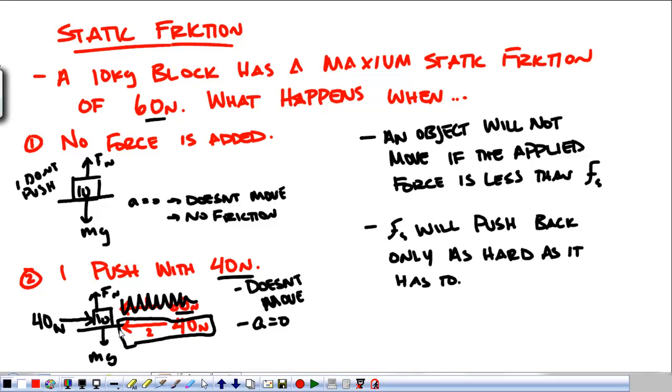What this means is that this block will remain in place until I increase my applied force to something bigger than 60. In fact, what we're going to say is that if I push with 60, static friction is going to be less than 60. 60 is the maximum value, but if I push at 60, it breaks free and moves.